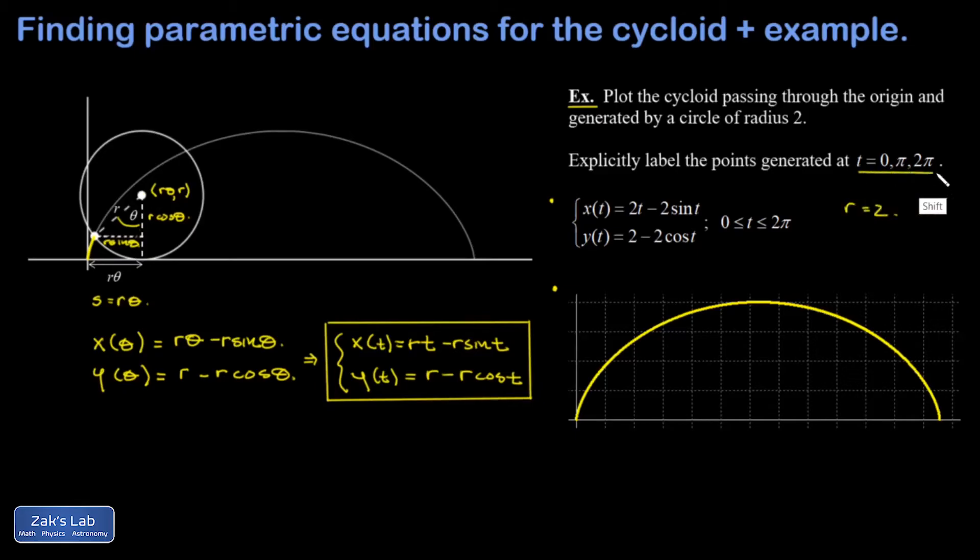The part of the problem where we actually have to do a little bit of work is this: explicitly label the points generated at t = 0, t = π, and t = 2π. This is to help us get a little better intuition for how the cycloid works.